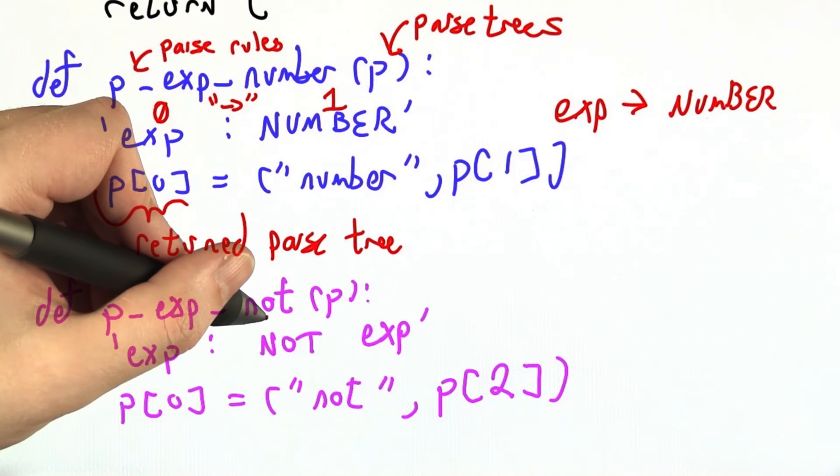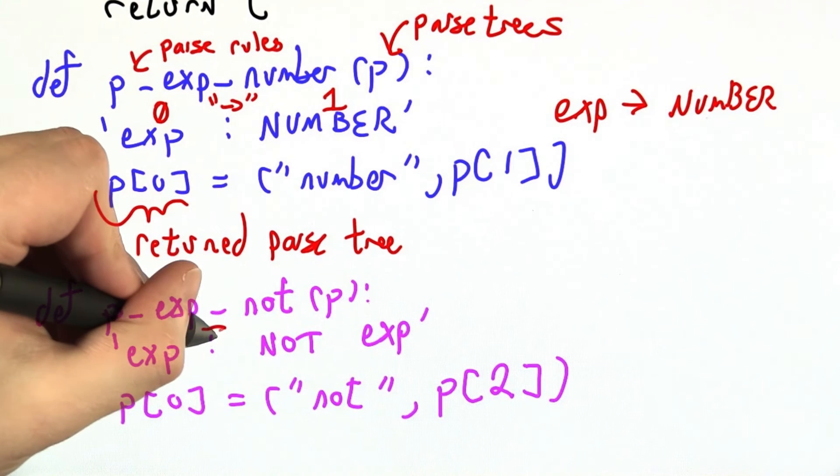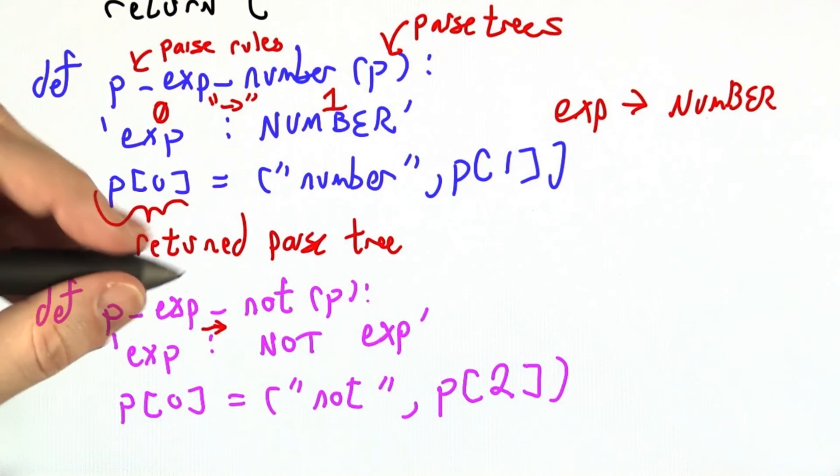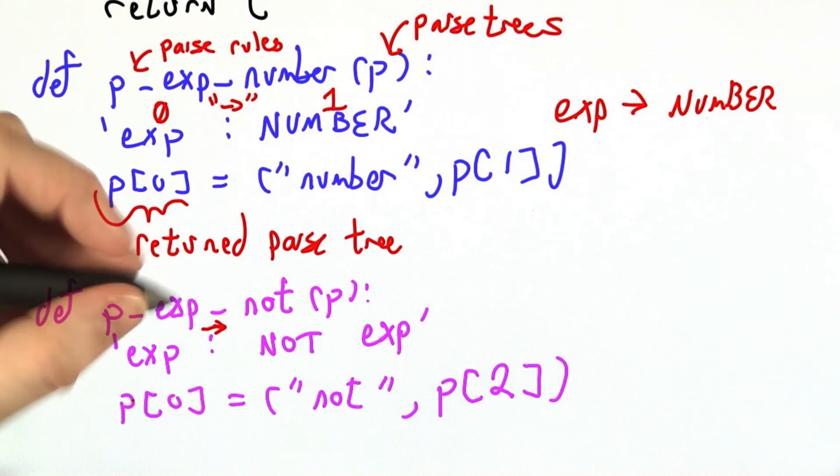And then down here I've written out my grammar rule in almost English. And again this colon is like the arrow that we would normally draw. And then below that I have written out how to construct the final abstract syntax tree.